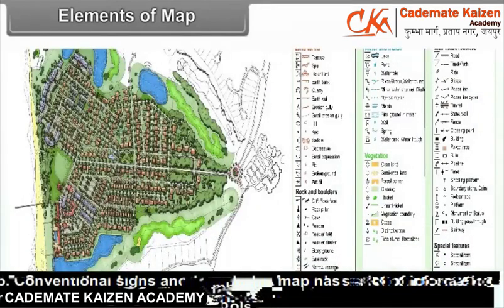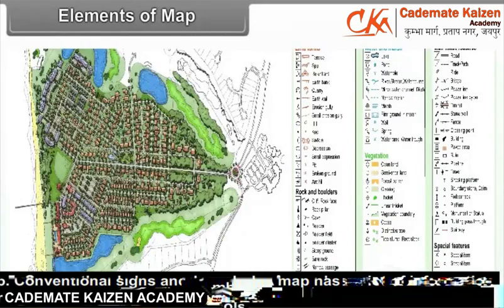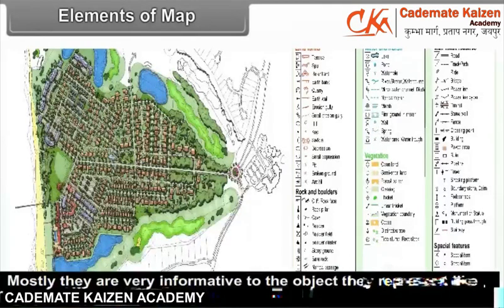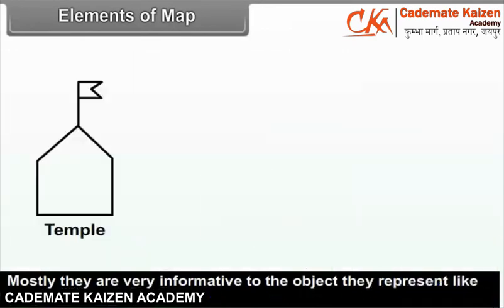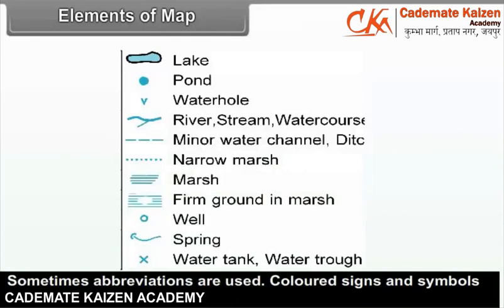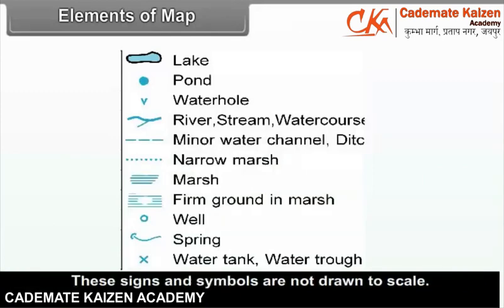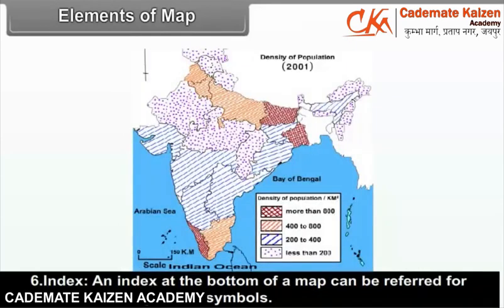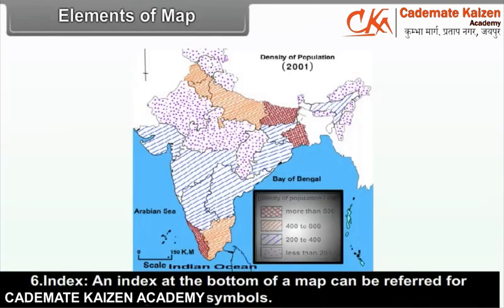Conventional signs and symbols: A map has a lot of information represented by signs and symbols. Mostly they are very informative to the object they represent, like temple, mosque, or church. Sometimes abbreviations are used. Colored signs and symbols add a lot of information. These signs and symbols are not drawn to scale. An index at the bottom of a map can be referred to for conventional signs and symbols.